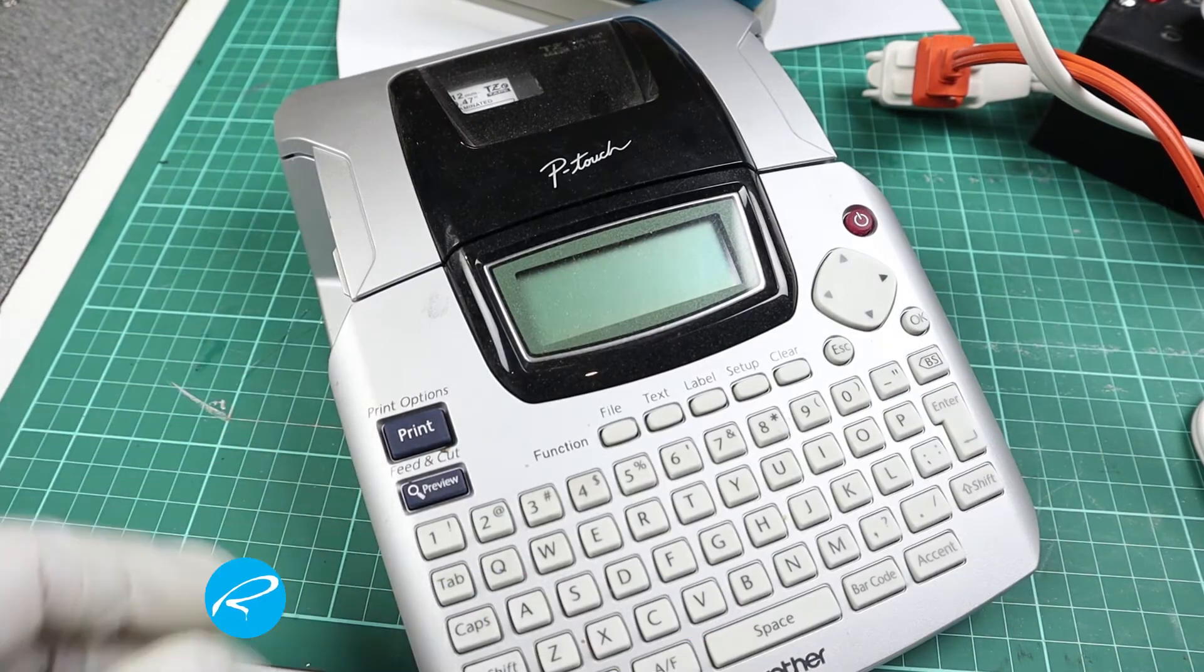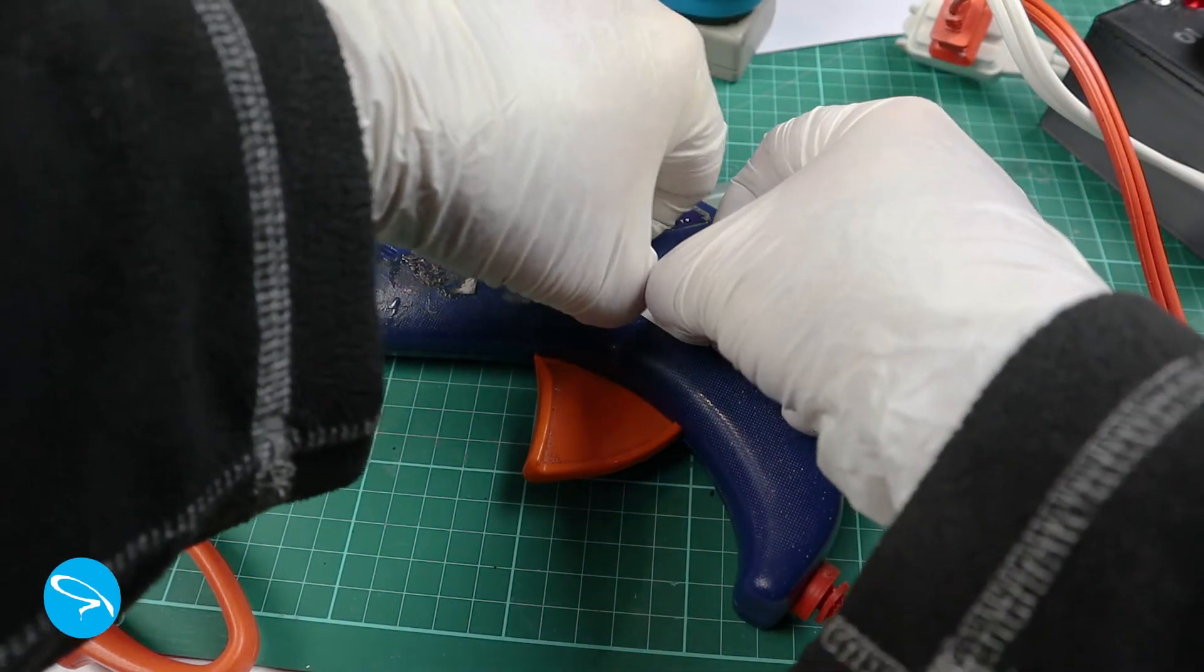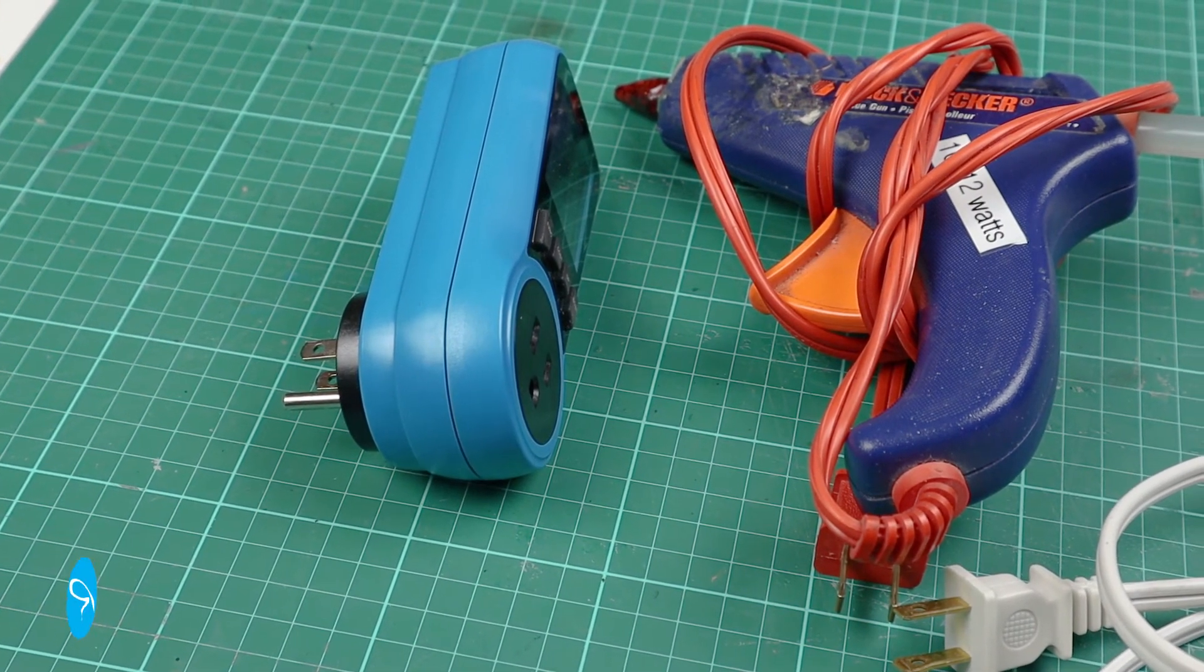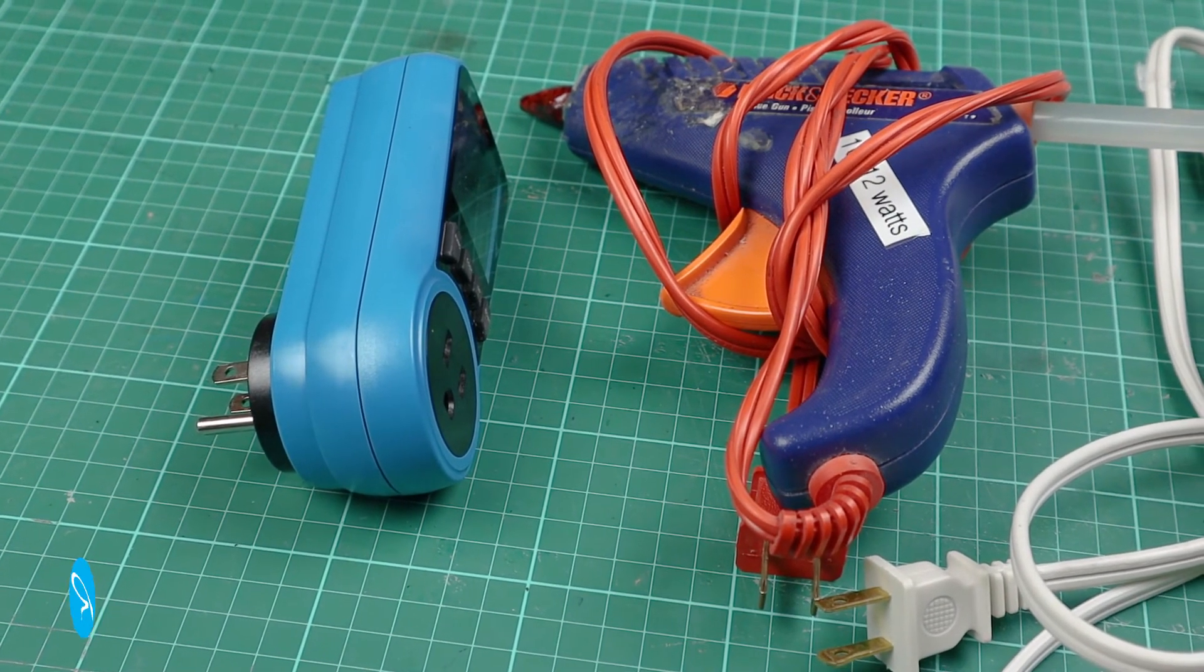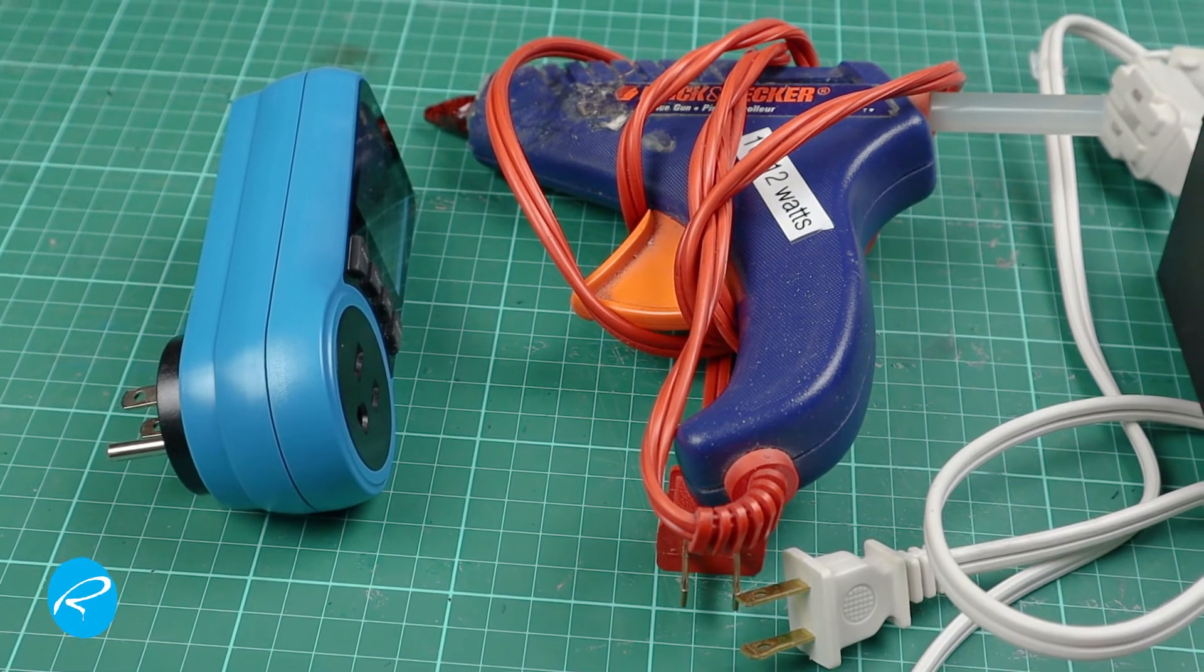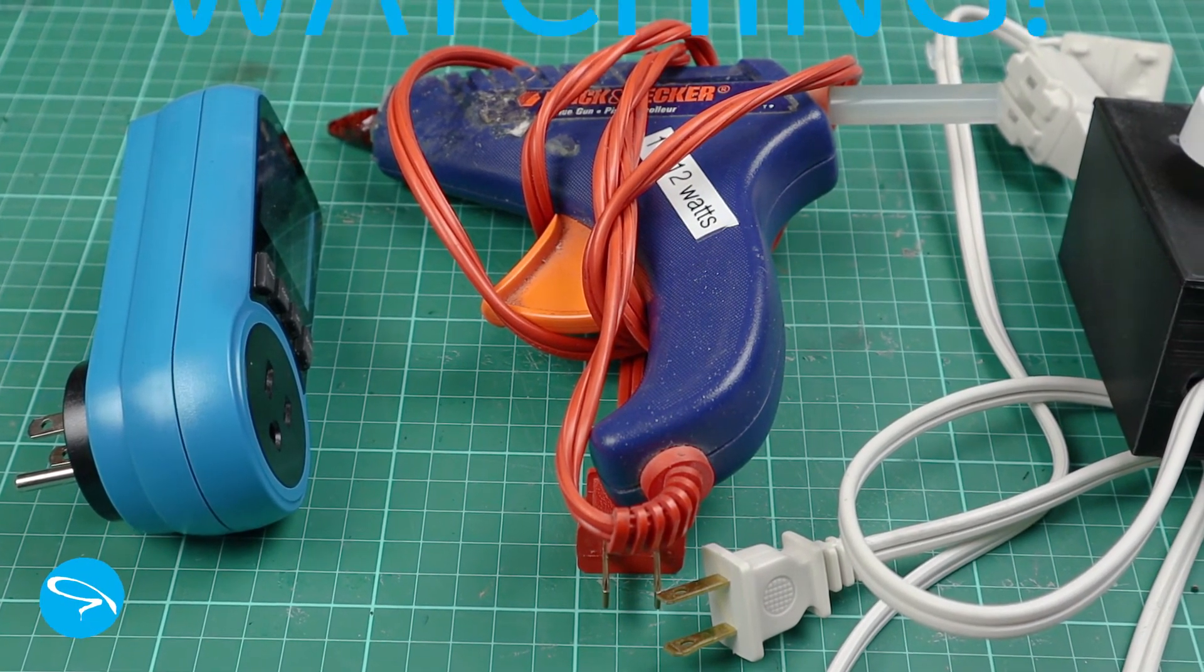The last step is to use a label maker to create a label for the glue gun, so I don't forget what the ideal setting is supposed to be. And that's it. One temperature controllable glue gun. If you liked this video, or found it informative or educational, please click the like and subscribe buttons. Thanks for watching.